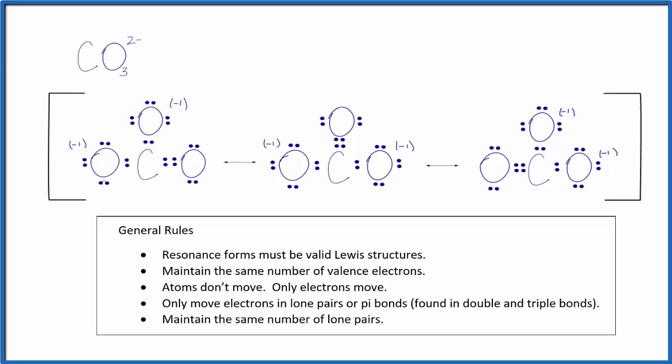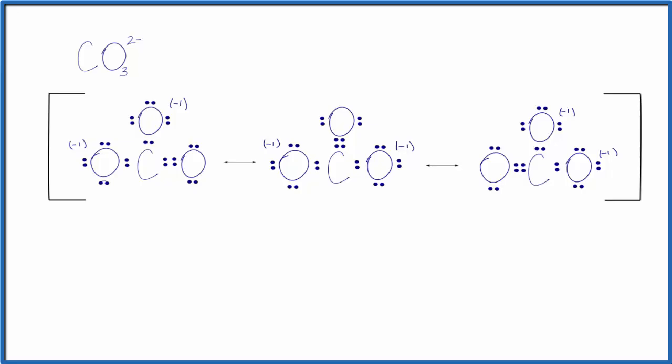And we didn't move any atoms—we only moved electrons. Understand that these arrows don't mean that we're switching back and forth. These are all just three different ways to look at the same structure for the carbonate ion. In fact, the actual structure is an average of the three.